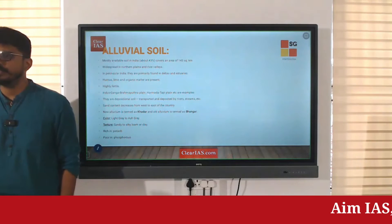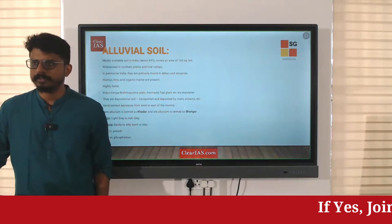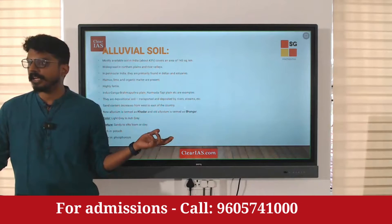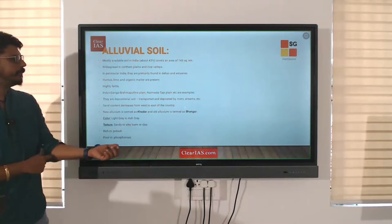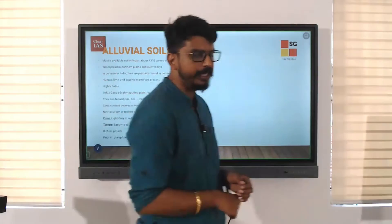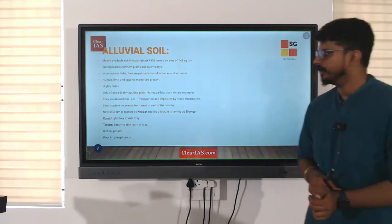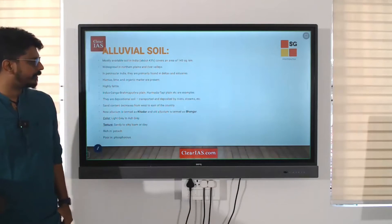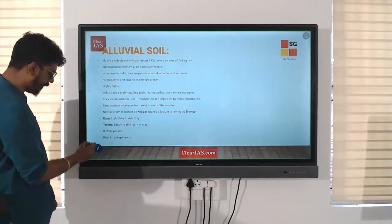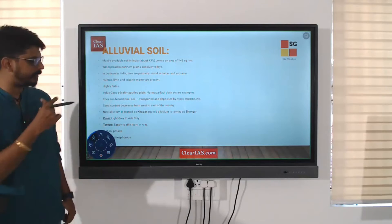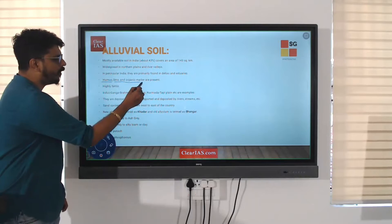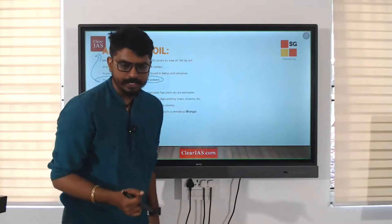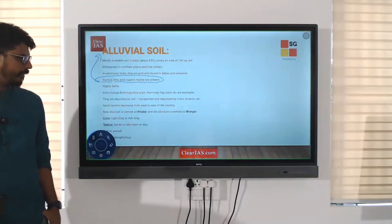Is alluvial soil found in peninsular India? In the deltas of big rivers like Krishna, Godavari, and Kaveri, you do find alluvial soil. In peninsular India, they are primarily found in deltas and estuaries. Humus, lime, and organic matter are present in alluvial soil.